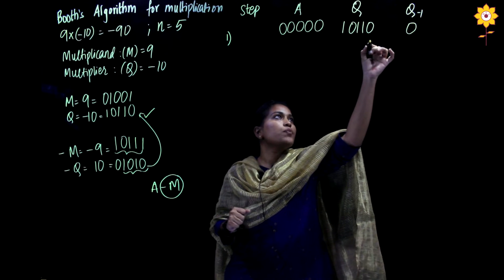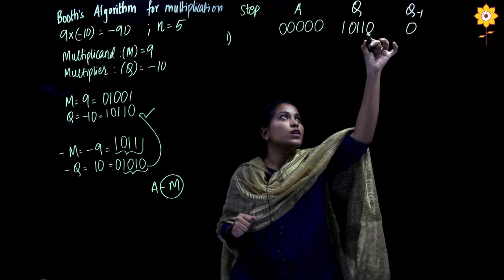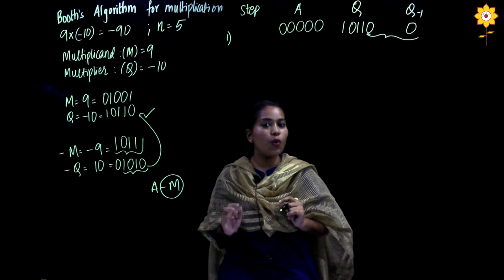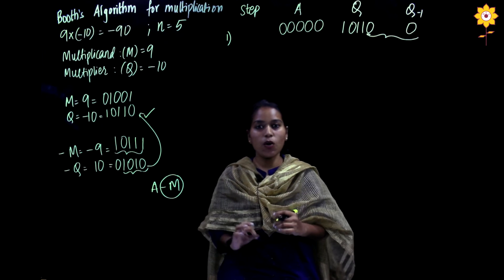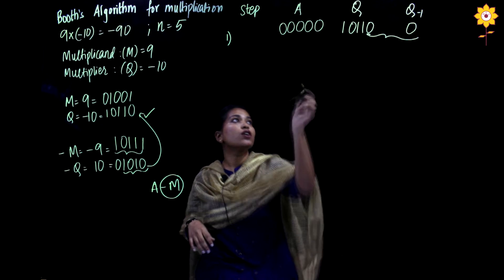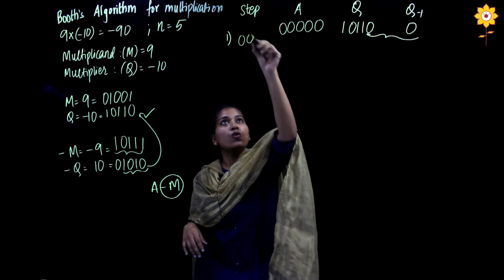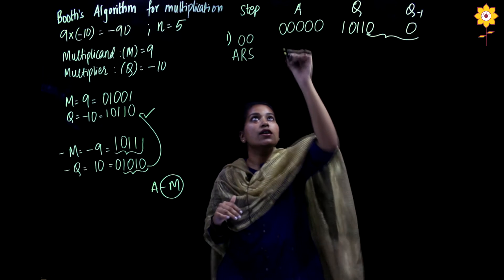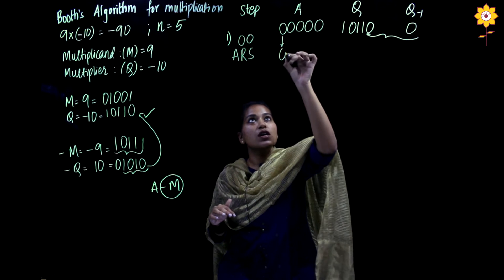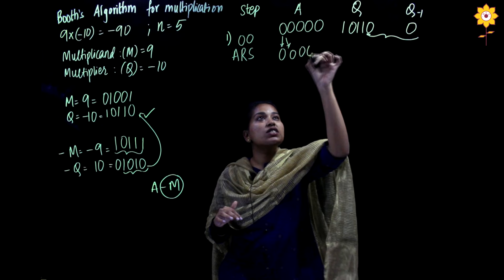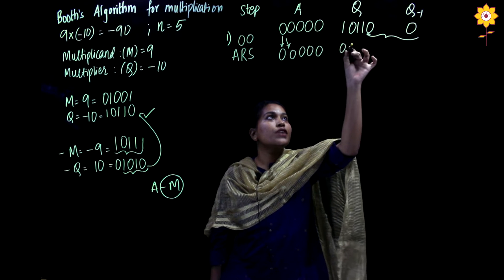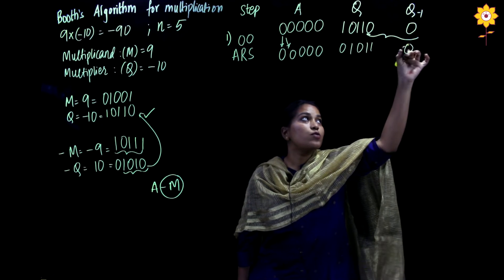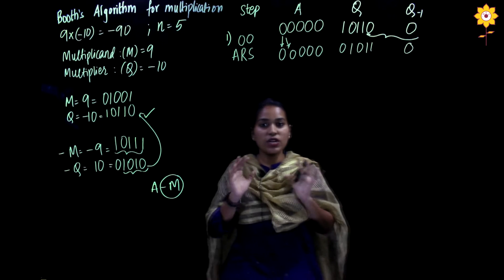Step 1: Compare the Q0 bit and Q minus 1. The combination is 0 and 0. When both bits are 0 and 0, we simply perform an arithmetic right shift. The MSB is replicated, all bits shift right, and the final bit is shifted out. Step 1 is done.